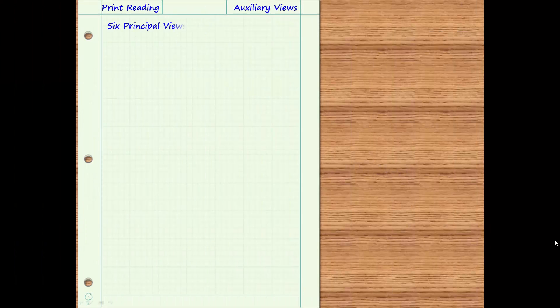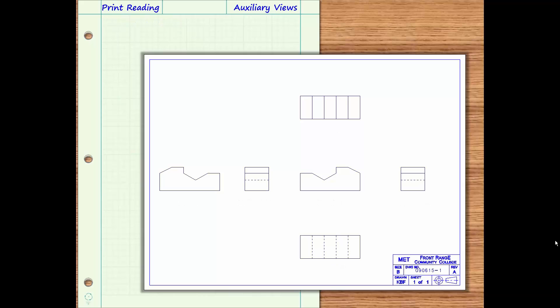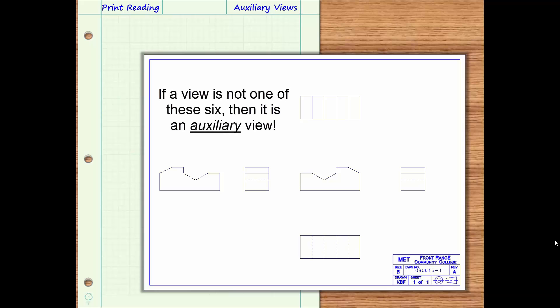There are six principal views defined by standard ASME Y14.3: the front, right side, top, left side, bottom, and rear views. If present on a print, these views all have a defined location relative to each other. The principal views are rarely labeled because it is expected that the print reader can identify any of the six principal views by its location on the print. If a view is not located in one of these locations, then it is classified as an auxiliary view.